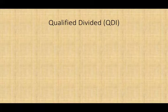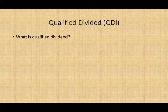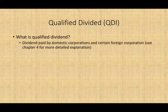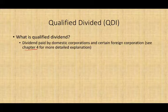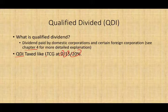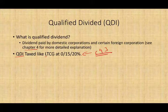Let's talk first about qualified dividend. What is a qualified dividend? It's something we discuss in detail in Chapter 4, but we need to review it briefly. It's a dividend paid by a domestic corporation and certain foreign corporations. Qualified dividend income is taxed like long-term capital gain at 0%, 15%, and 20%, depending on your tax bracket and income level. That's why you need to go back to Chapter 3 if you don't know how those rates are used.